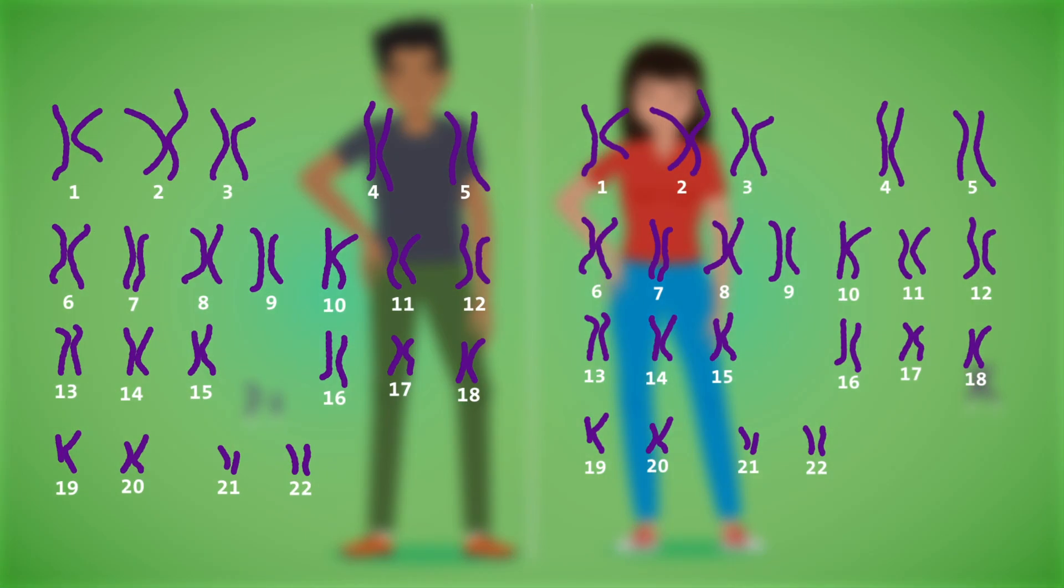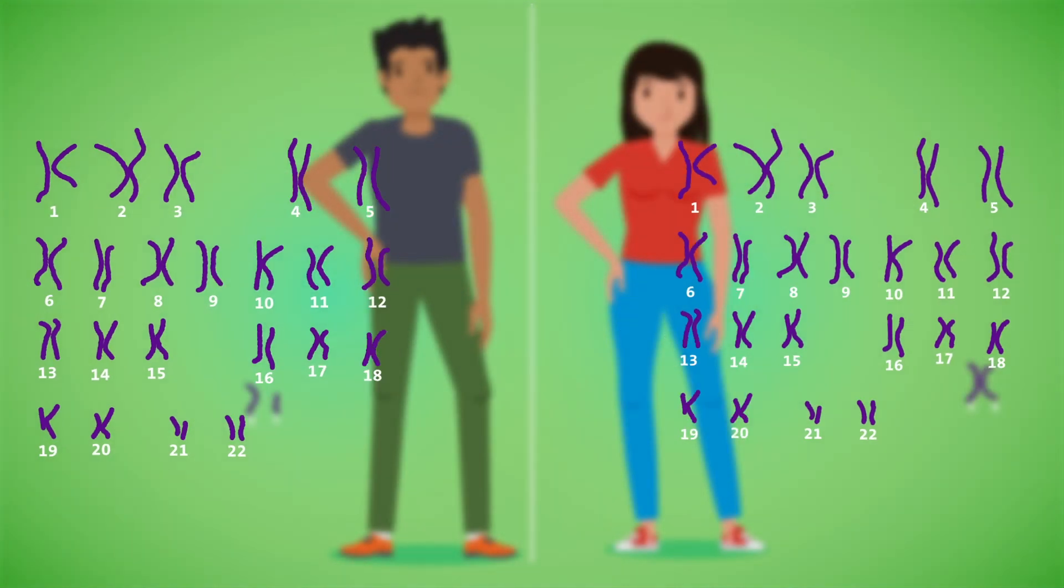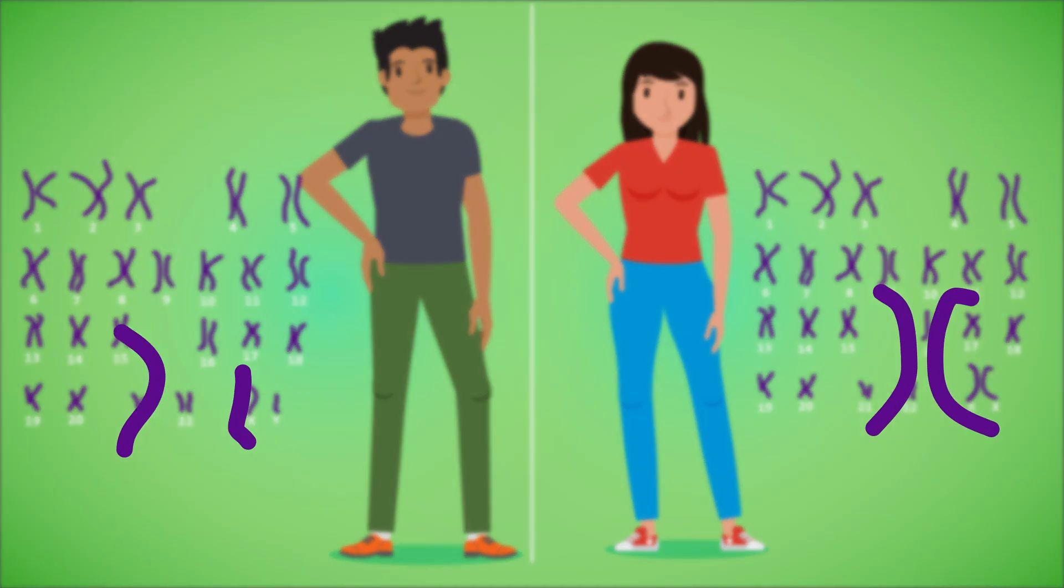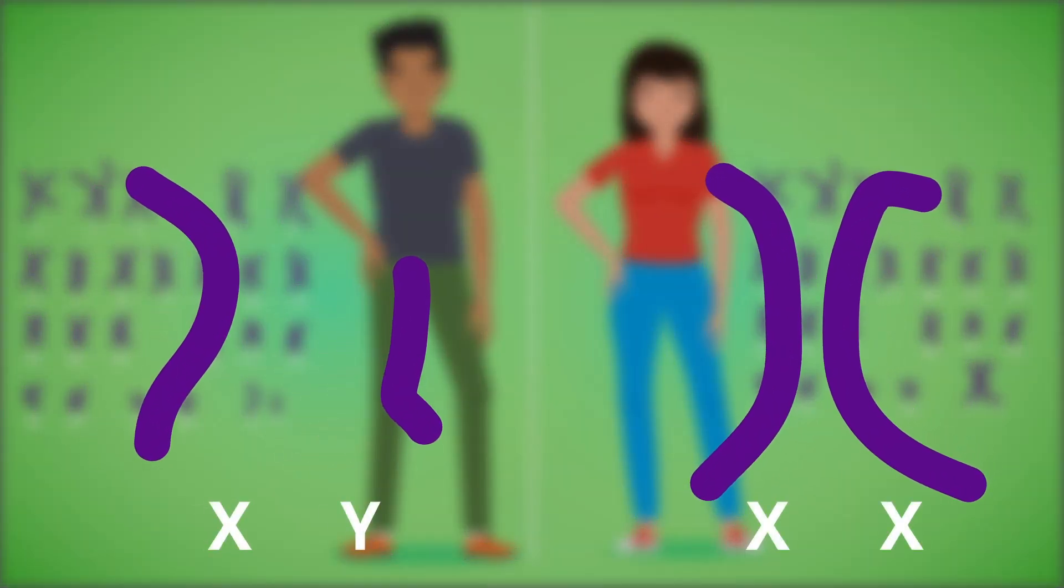The first 22 of 23 pairs of chromosomes are the same for both men and women. The last pair is our sex chromosome, which differs between the genders, as females typically have two X chromosomes, and males have one X and Y chromosome.